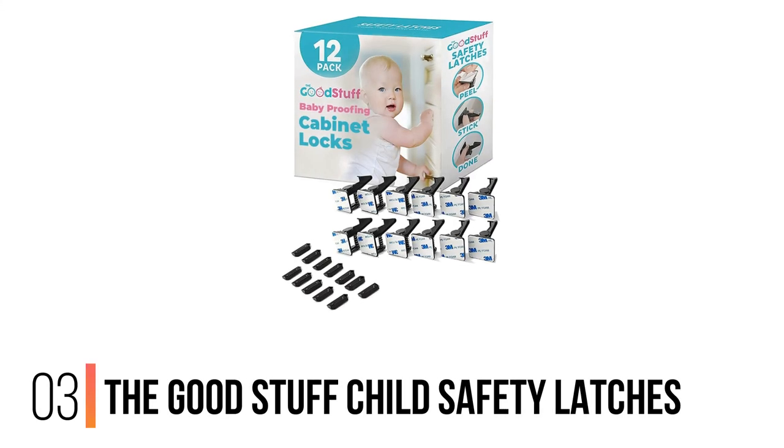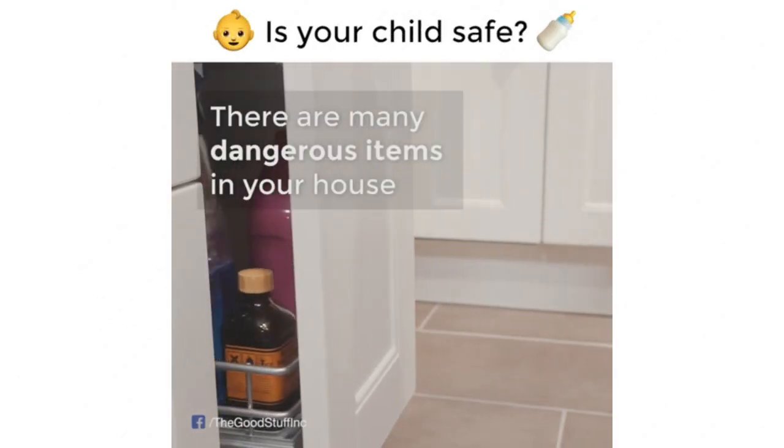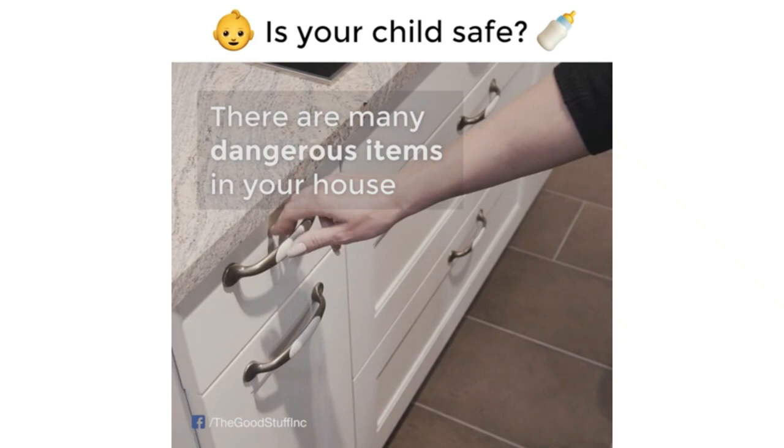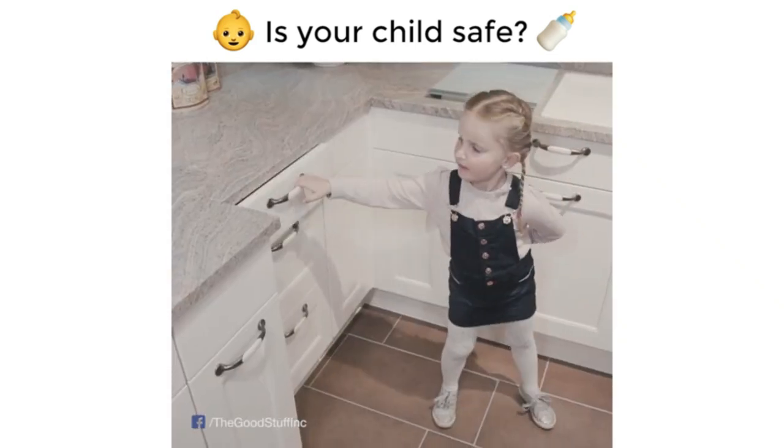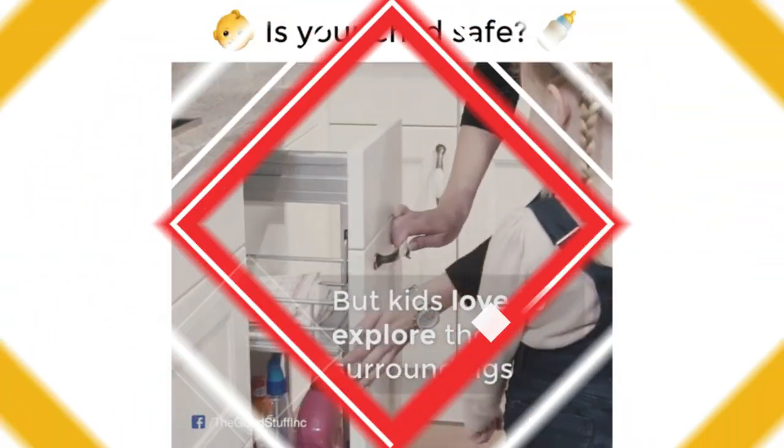Number three: The Good Stuff Child Safety Latches. These latching locks are attached with adhesive and are completely invisible. Plus, there's no button to push or key to lose. These locks are great for keeping little ones out of drawers.